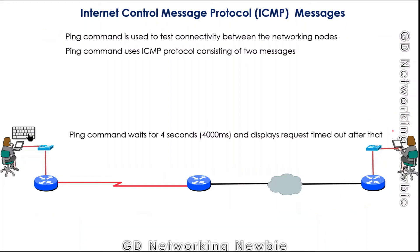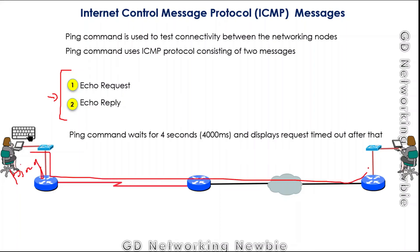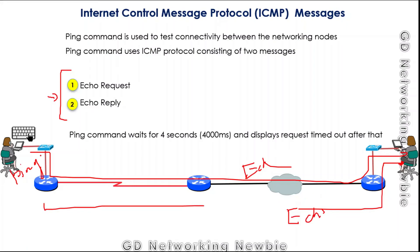The well-known ping command is used for checking connectivity and reachability of nodes, and it uses two ICMP messages: echo request and echo reply. When we use ping, echo request packets are sent to the destination. If the destination is reachable, it sends back an echo reply, and the command prompt shows that the ping was successful.